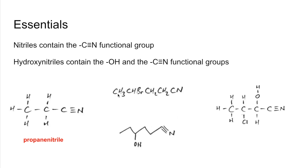Moving to the next one — counting the carbons: one, two, three, four, five carbons. Carbon number one is at the nitrile end, so the bromine is on carbon number four. This is called 4-bromopentanenitrile.